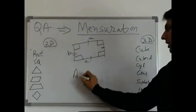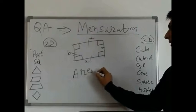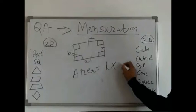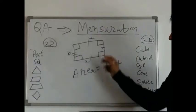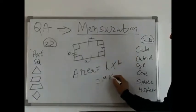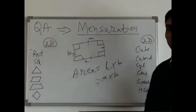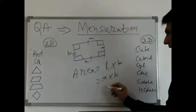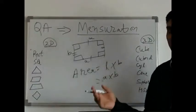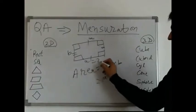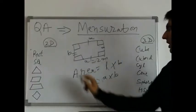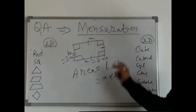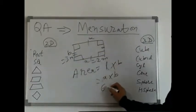The area of this rectangle is length into breadth, L into B. So in this case it will be A into B square units. Say A is 2 meters and B is 3 meters, so area of this rectangle is 2 into 3, which is 6 square meters.